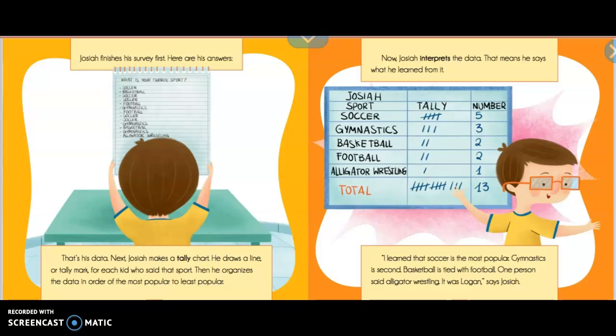Now, Josiah interprets the data. That means he says what he learned from it. I learned that soccer is the most popular. Gymnastics is second. Basketball is tied with football. One person said, alligator wrestling. It was Logan, says Josiah.